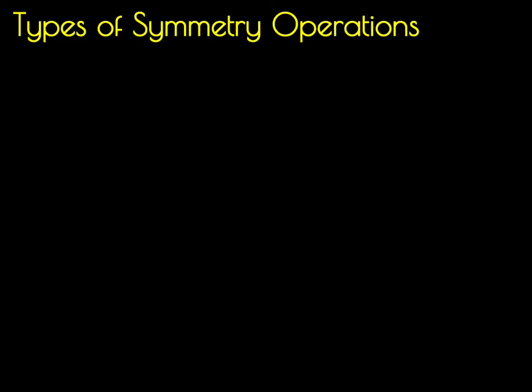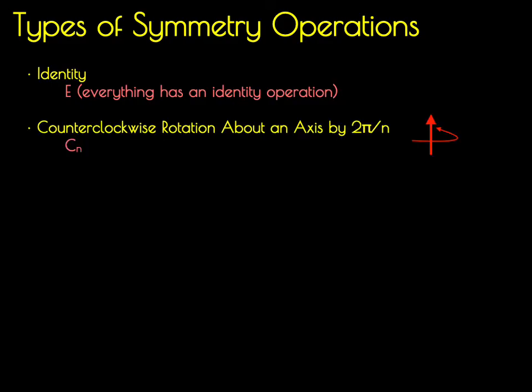For our purposes, there are five basic types of symmetry operations that we're going to be discussing. The first is called identity, symbolized with an E, and it's the operation that occurs when you do nothing to an object — every single object has the identity operation. Another symmetry operation is a counterclockwise rotation about an axis by 2π over n radians, symbolized with C subscript n, where n is what you're dividing 2π by.